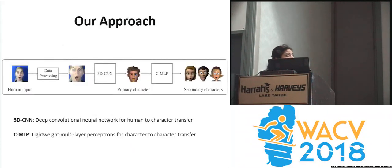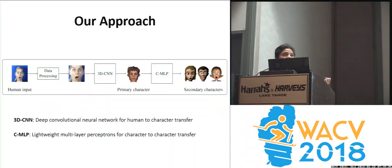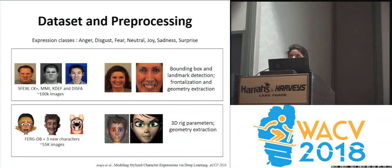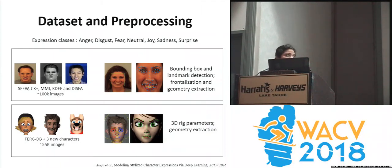Here is an overview of our approach. We use a deep neural network to transfer the facial expressions from humans to stylized characters, which we call the primary character, and then we use a lightweight method in a semi-supervised way to transfer the expression from a primary character to secondary characters. We've used standard datasets, well known and publicly available, for expressions for both humans and stylized characters. Notably, we've also added three new characters to the dataset, and we've shown that our model can perform even on unseen characters not part of the dataset.